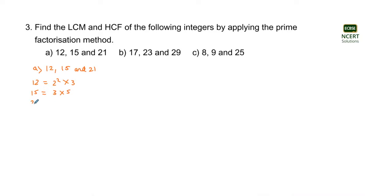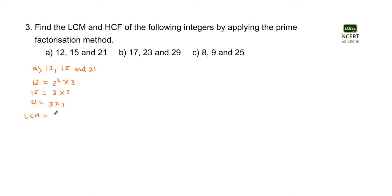The number 21 will be equal to 3 times 7. Now we are asked to find the LCM and HCF of these integers. As we know, LCM is the product of the unique prime factors involved in all three numbers — that is 12, 15, and 21 — raised to their maximum power.